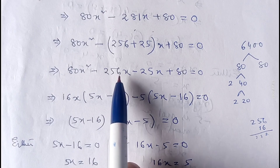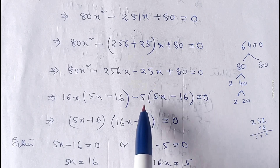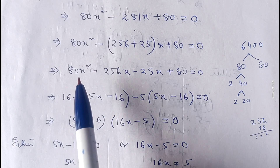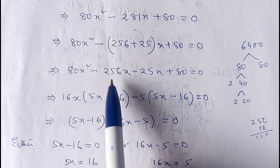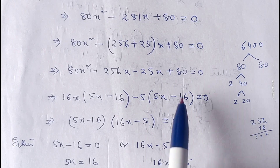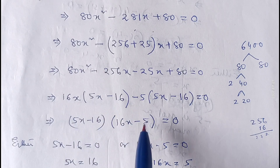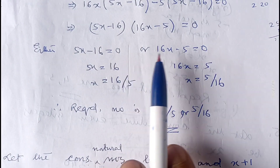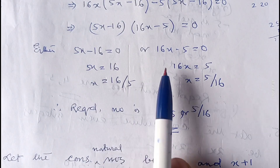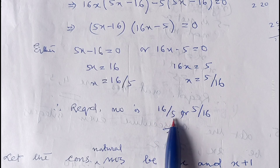Taking 16x common gives 5x minus 16. From the last two terms, taking minus 5 common gives 5x minus 16. Taking 5x minus 16 common, we are left with 16x minus 5. So either 5x minus 16 equals zero giving x equals 16 by 5, or 16x minus 5 equals zero giving x equals 5 by 16. Therefore the required number is either 16 by 5 or 5 by 16.